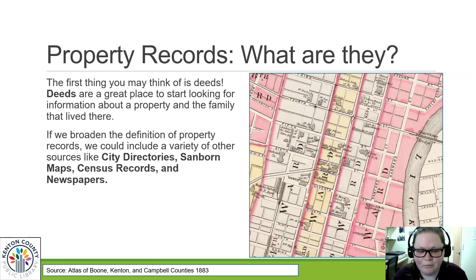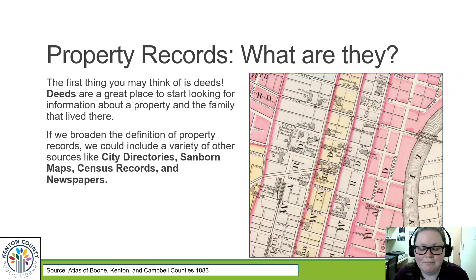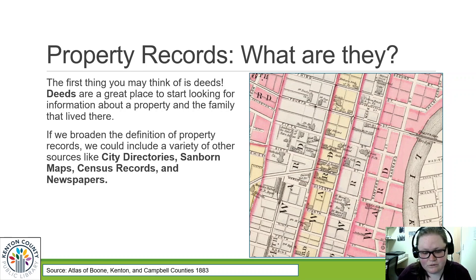Property records and deeds are a great place to start, and we'll definitely talk about those. But I also want to broaden what we consider the definition of property records, because if we do that we can look at more variety of resources — including things like city directories, Sanborn maps, census records, and newspapers. These are all non-traditional sources of property records, but they all contain great information about property and genealogical data as well.